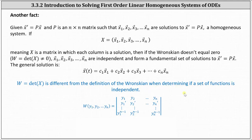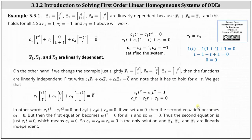Recall we defined the Wronskian as a determinant where for the matrix the first row consisted of the functions in the set, and the subsequent rows were the derivatives. Now let's look at an example. Here we're given the vector-valued functions x1, x2, and x3. These three vector-valued functions are linearly dependent. Notice if we add x1 and x3, the sum is equal to x2.